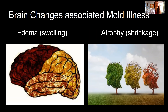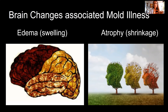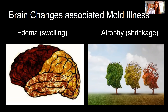Brain changes from mold illness include edema — swelling, like a brain on fire — and atrophy, which is shrinkage of the brain and indicates neurodegeneration. It's a bit quicker to calm down edema by removing what's causing the inflammation. Atrophy takes longer to reverse with neuroplastic changes, and once there's a certain level of neurodegeneration, it can be tough to regenerate those neural synaptic connections. In early atrophy, we need to switch that around as quickly as possible.